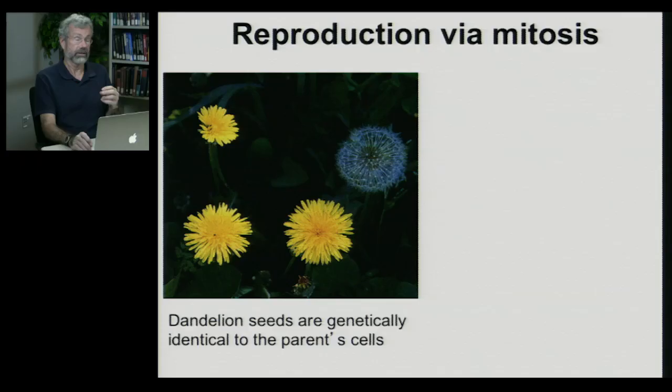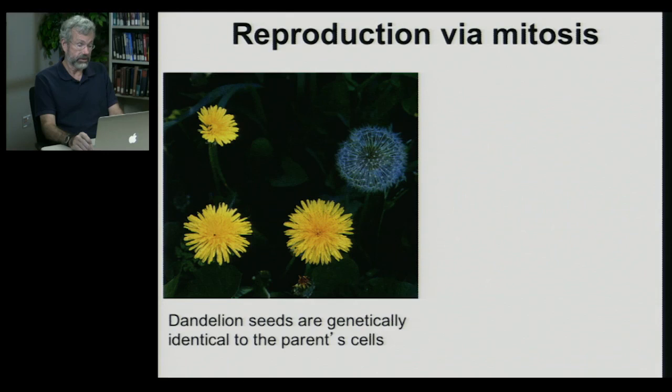Reproduction can also take place through the process of mitosis. Dandelions, which are quite common around here — you see their flowers, the first things to poke out in the spring, yellow flowers everywhere and the little seeds flying through the air — dandelions are asexual. The seeds are genetically identical to the parent's cells. This plant has produced mitotic cells, diploid cells that will develop into seeds that then become baby dandelions.